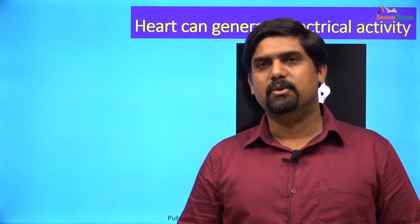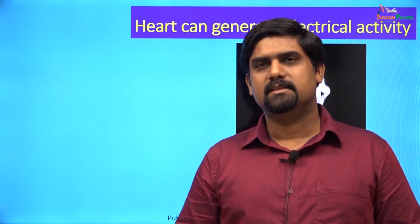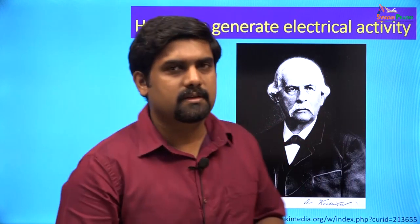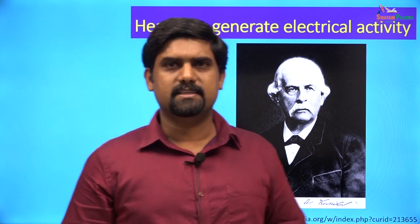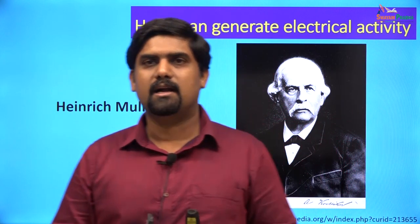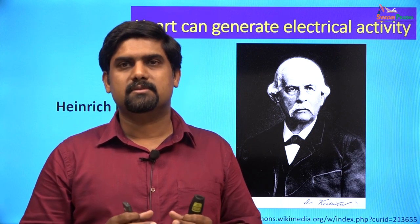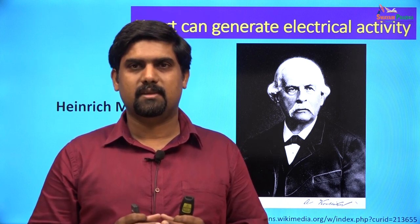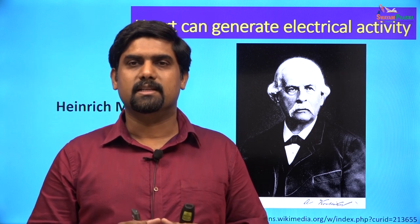It was believed earlier that the heart is under neuronal control, just like the skeletal muscle. In the 19th century, it was demonstrated that the heart can beat on its own even after removal from the body of animals like frogs. Albert von Kollicker, a Swiss anatomist and physiologist, did an interesting experiment with German anatomist Henrich Muller. They took a heart from the body of a frog and placed this beating heart on the nerve of a nerve-skeletal muscle preparation. With each beat of the heart, the muscle twitched, proving that the heart was generating electrical activity which could spread to the nerve and stimulate the contraction of the muscle.